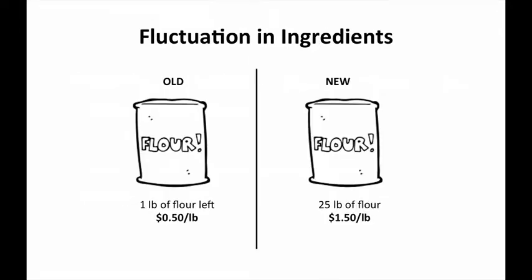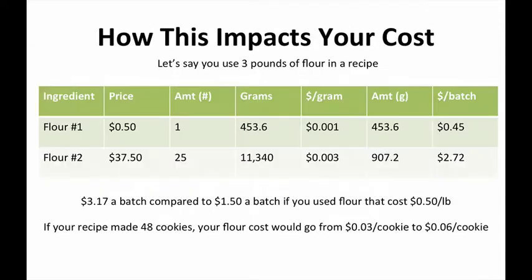Ingredient fluctuation is probably the biggest reason your cost would go up or down. For example, you have a pound of flour left at 50 cents a pound, but then flour goes up and you have to buy a 25-pound bag for $1.50 a pound. Here's the calculation: if you use that last remaining pound of flour from the old bag and then two pounds from the new bag, the flour you used costs $3.17 a batch, compared to $1.50 a batch if you had used all flour at 50 cents a pound.